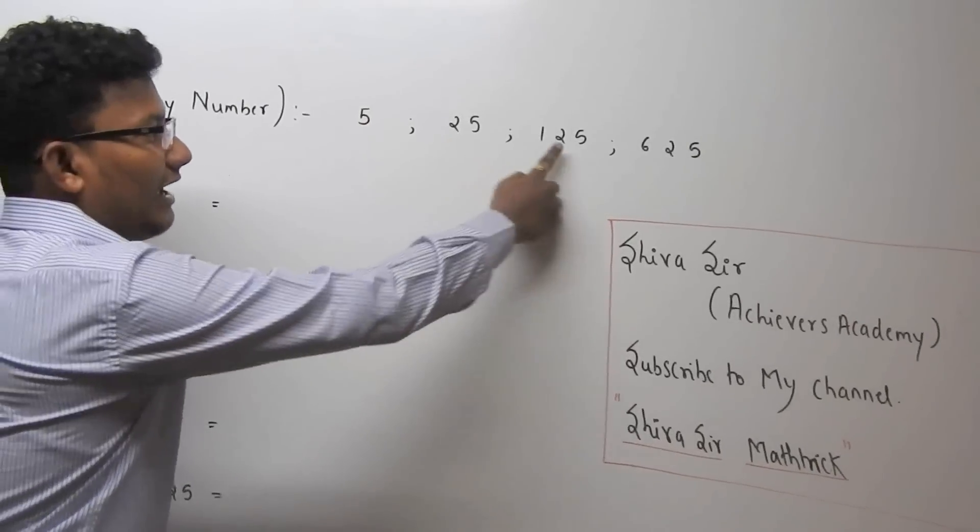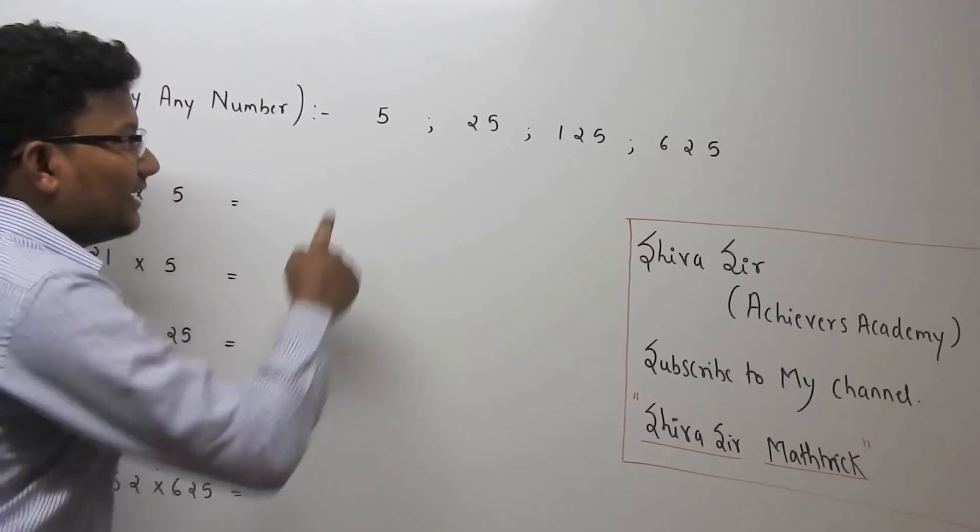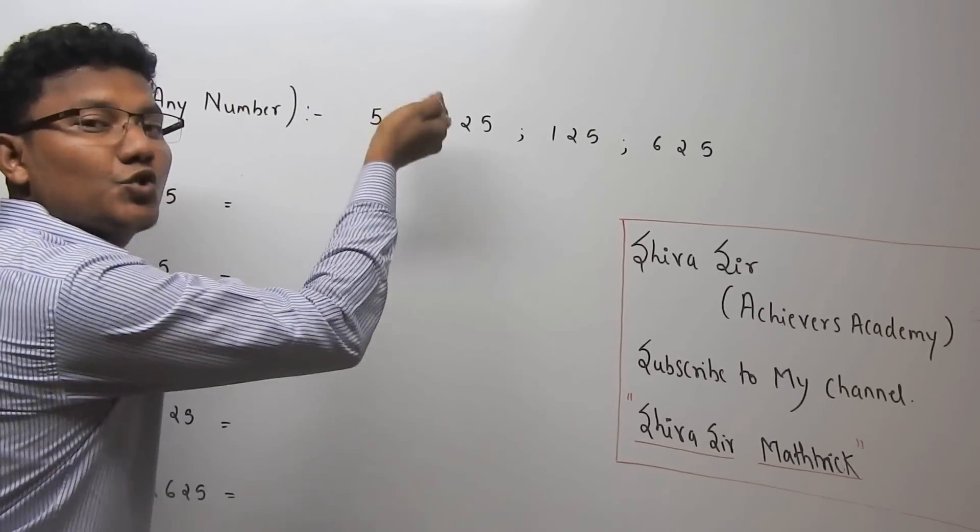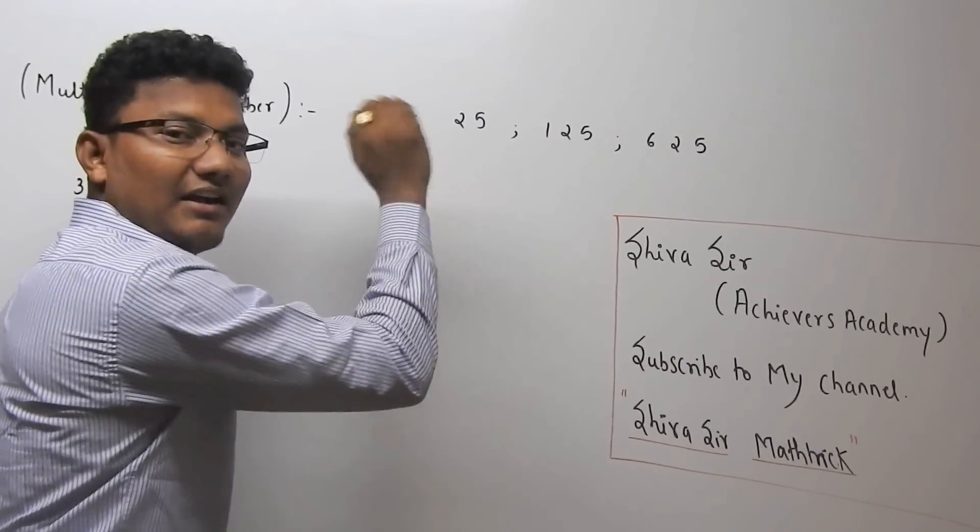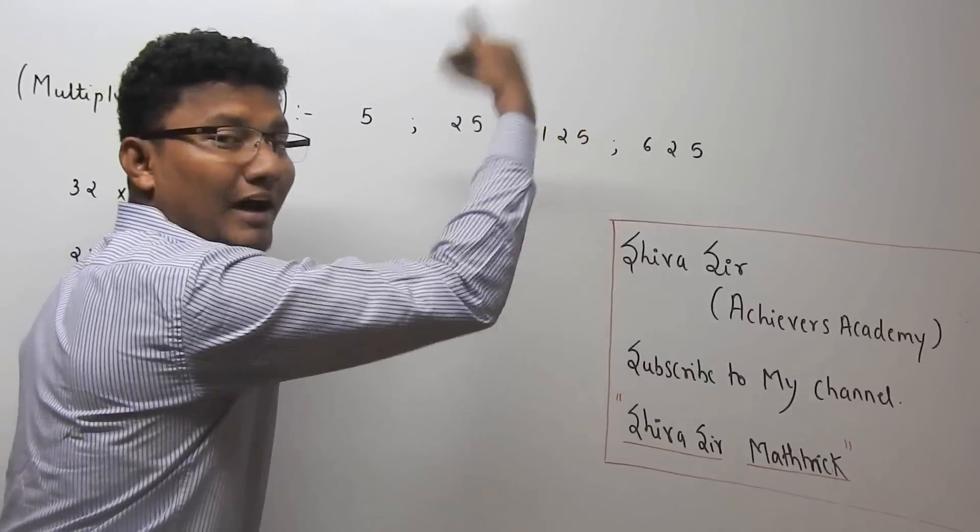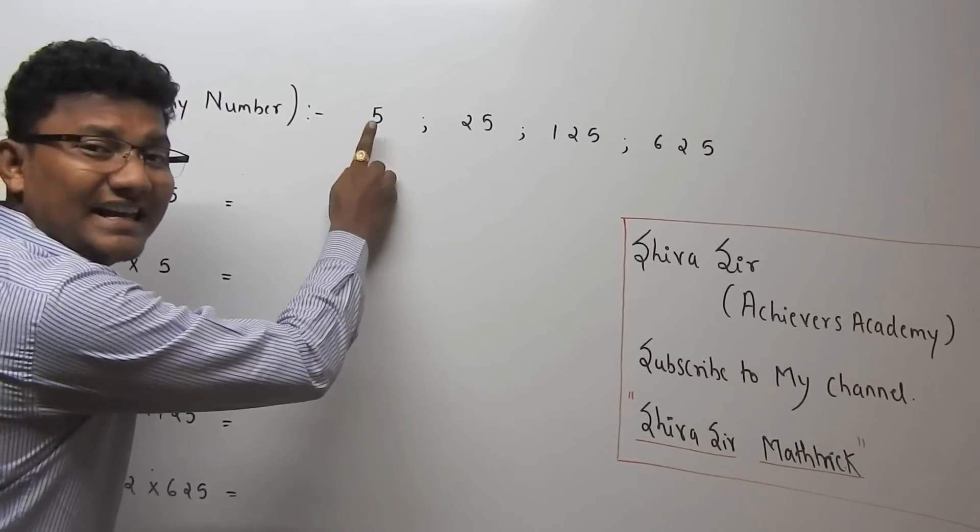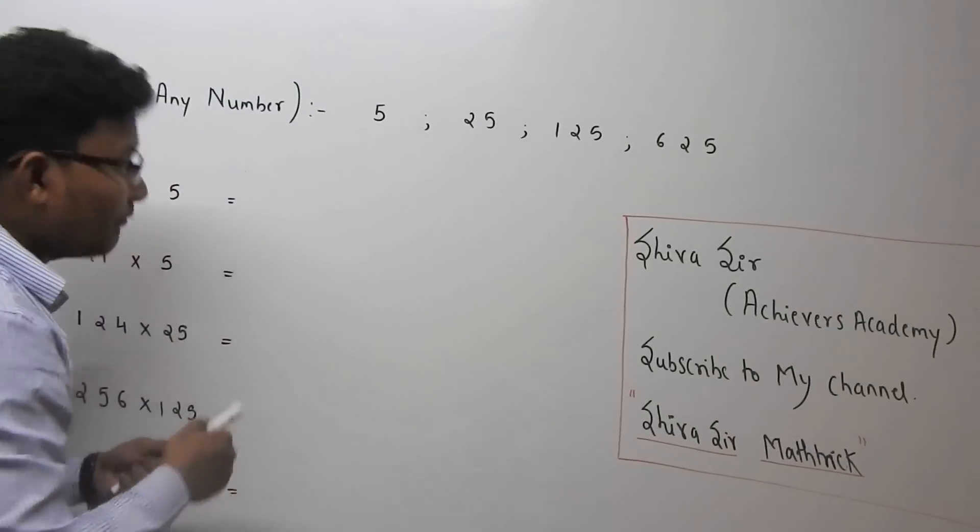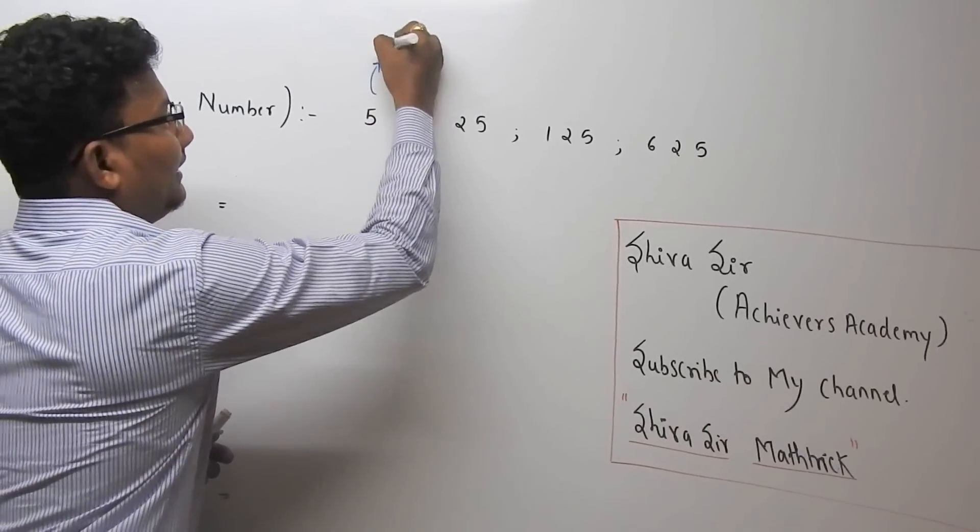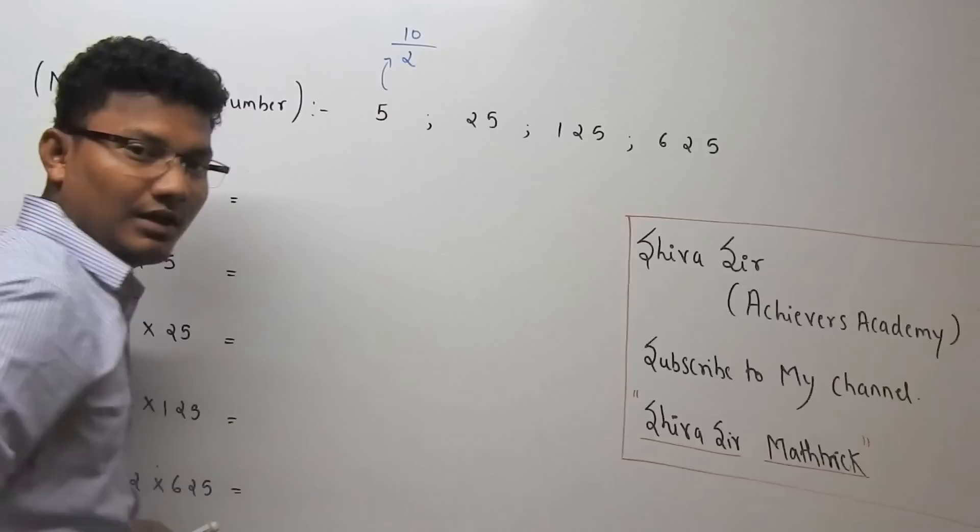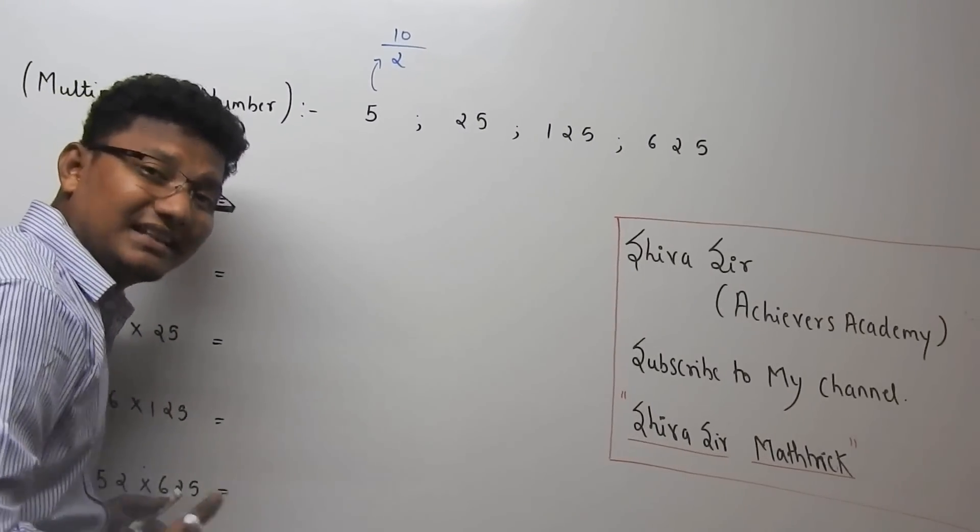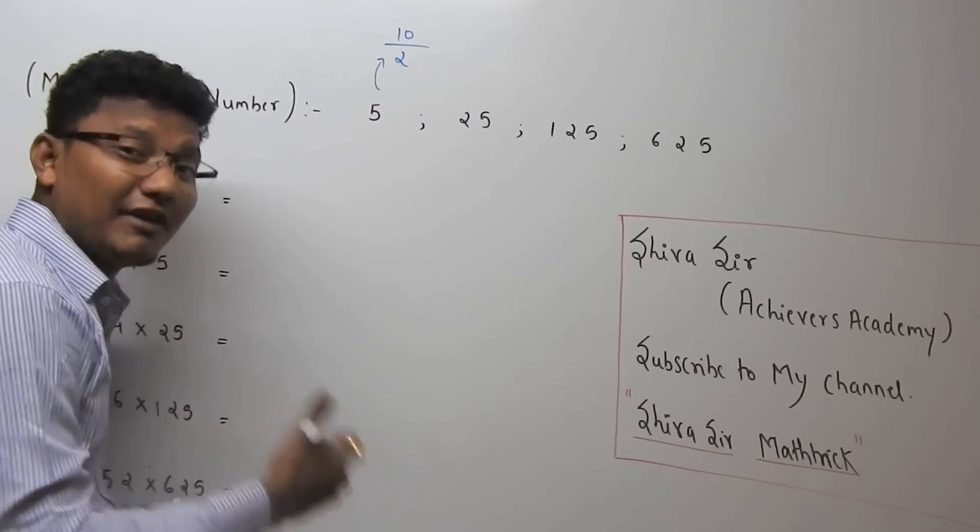So 5, 25, 125, 625 - it looks like 5 raised to 1, 5 squared, 5 cubed, 5 raised to 4. This 5 can be written as 10 by 2. Why 10 by 2? To make the calculation easy and faster.